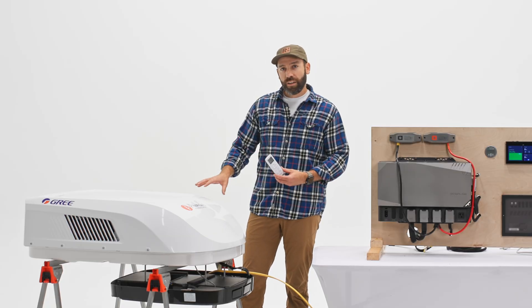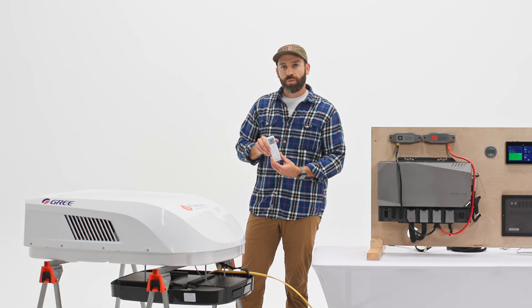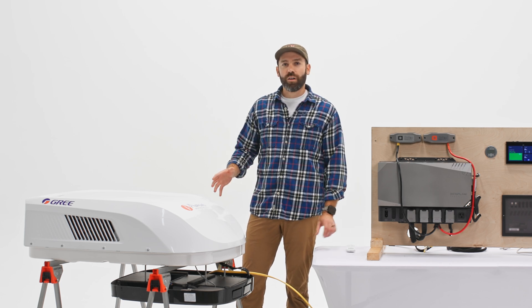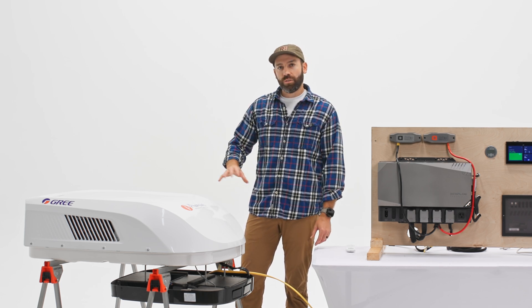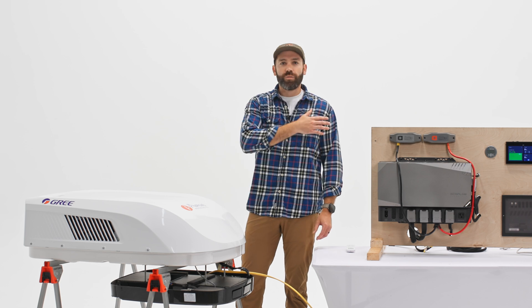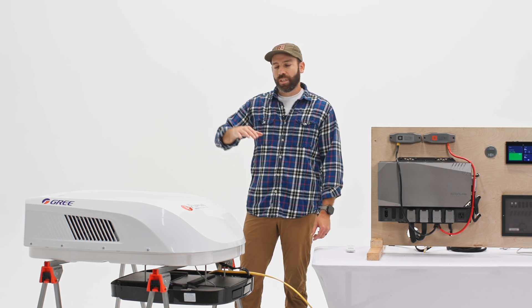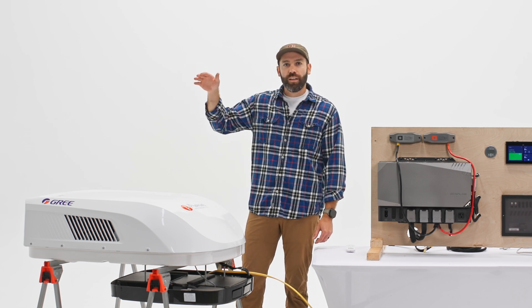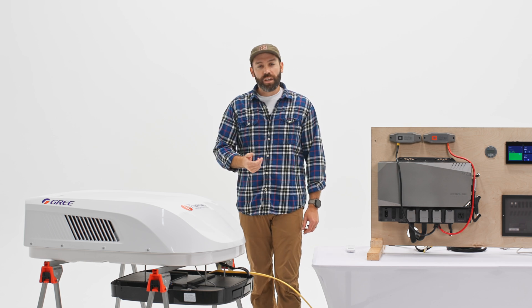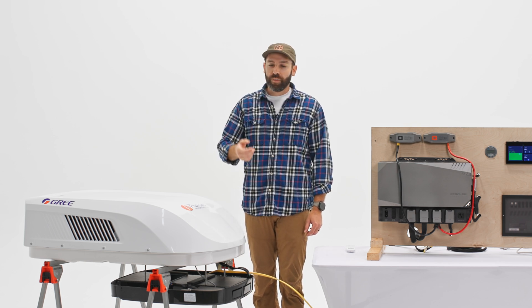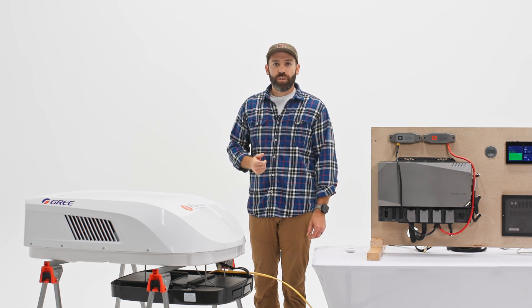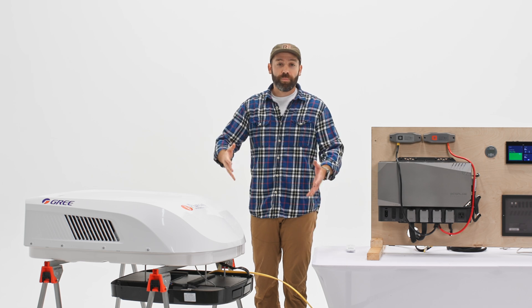Another great feature I really like about this, at least with the non-ducted units, you get the remote control and there is a Wi-Fi app. So if you're running Starlink, you can connect this to your Starlink router. You can go out for a hike, maybe the temperature starts to climb throughout the day, and as you start walking back, as long as you've got service, you can pull it up in your app and start cooling the van down an hour before you get there.